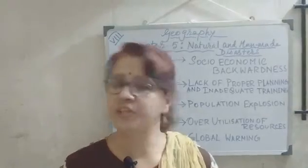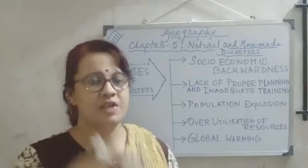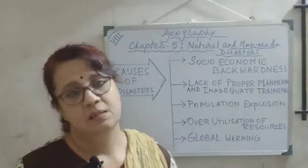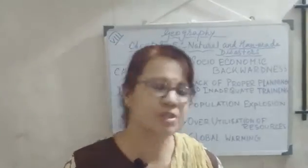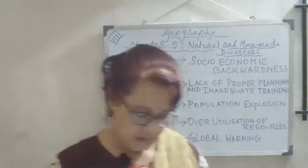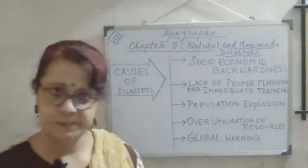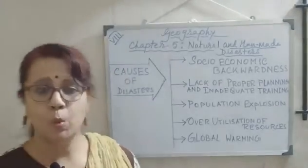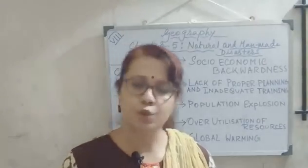The last point is global warming — a very important point. Due to global warming, glaciers are melting down and sea levels are rising. Increasing sea levels cause loss of land through submergence of islands and coastal areas. These are all the causes of disasters.